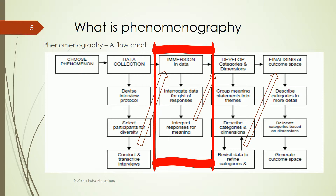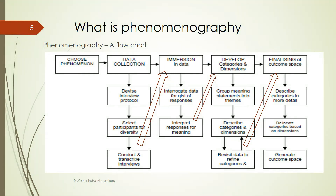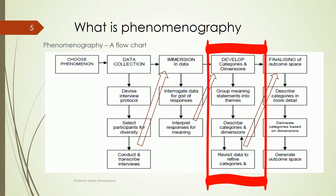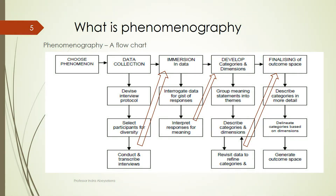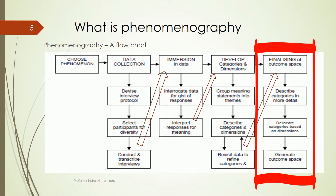These categories are meanings that are grouped into themes. They describe the meanings through categories and dimensions. To describe the meanings through categories and dimensions, the researcher has to revisit data and refine the categories through iterations. Once they are refined, they are presented in an outcome space.